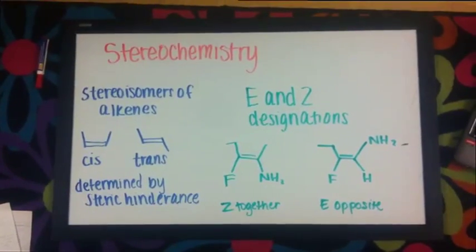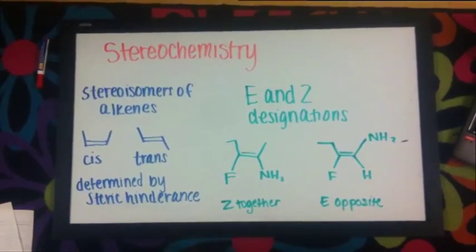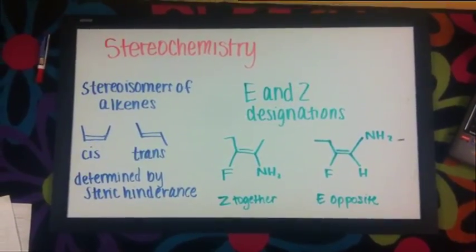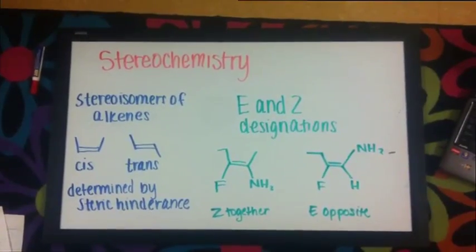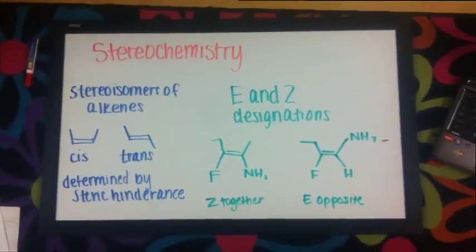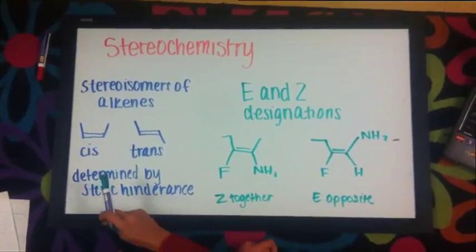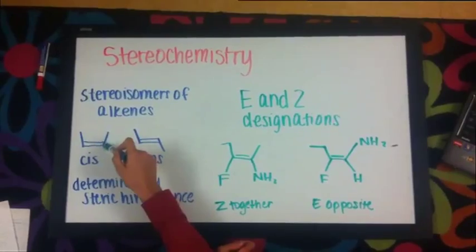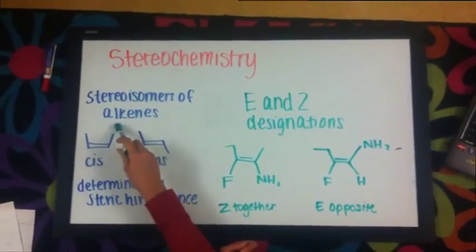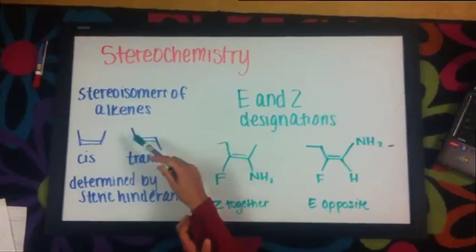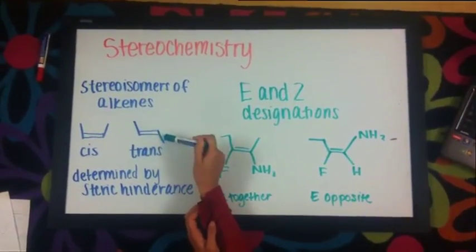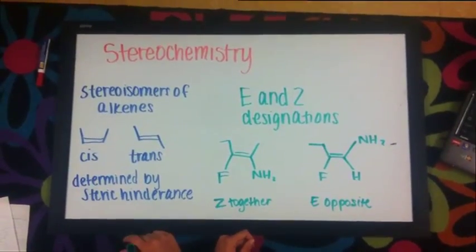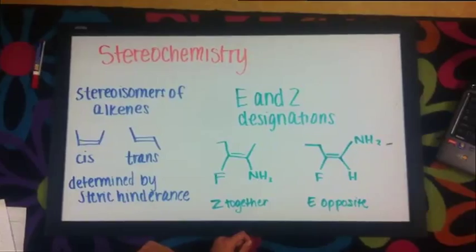Now that we've covered some examples of regiochemistry, we should go on to stereochemistry. There are two different types of designations we can do for stereochemistry. For stereoisomers of alkenes, there are two types: cis and trans. Cis means same side, so our substituents are on both the same side. On trans, they are on the opposite side, pointing in different ways. It is determined by steric hindrance, so we would always want the more stable arrangement.